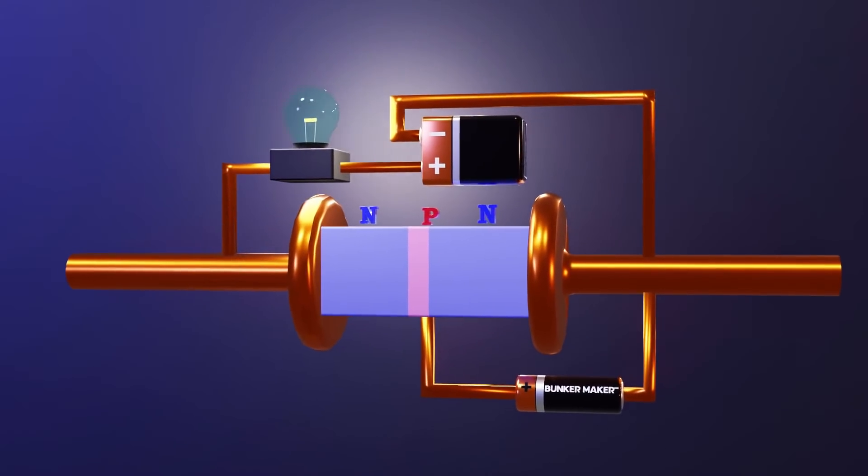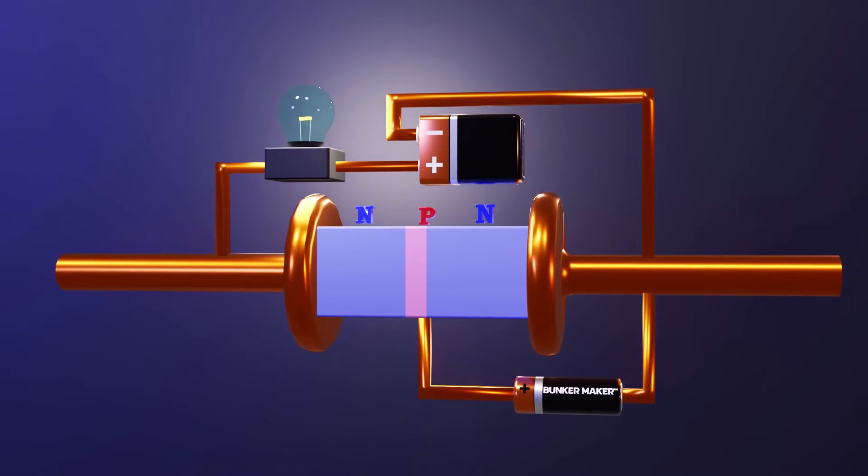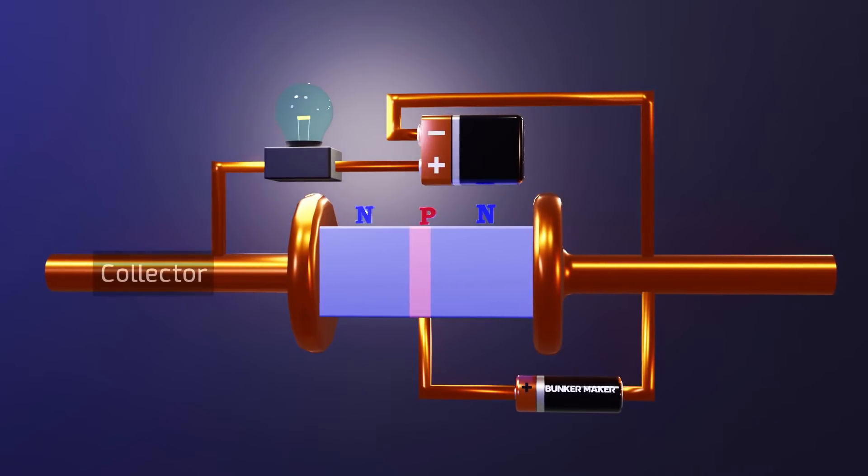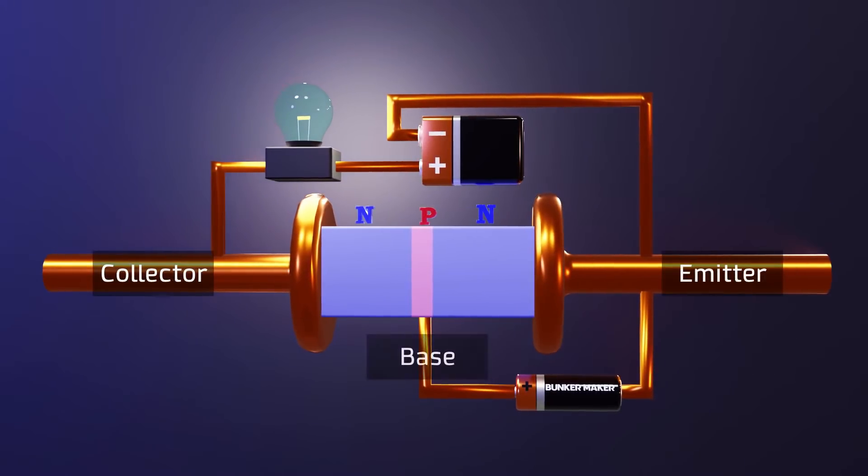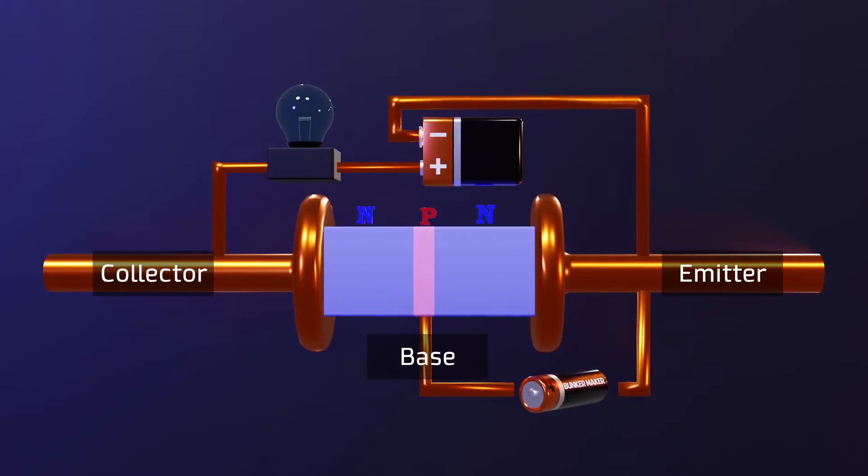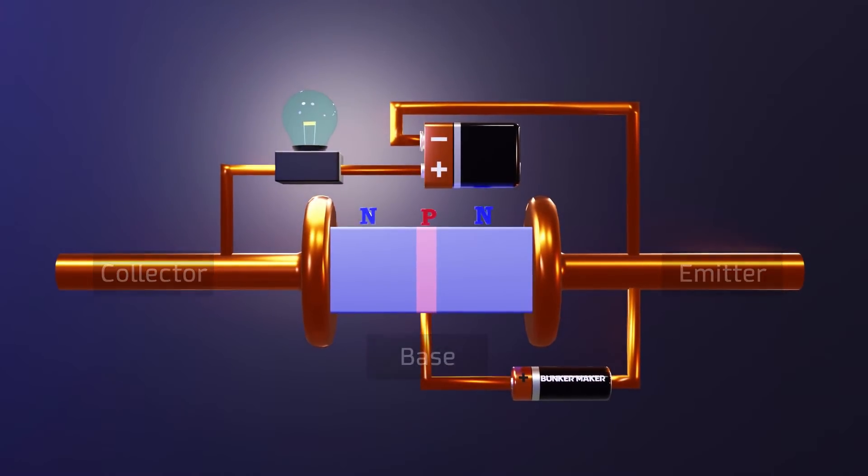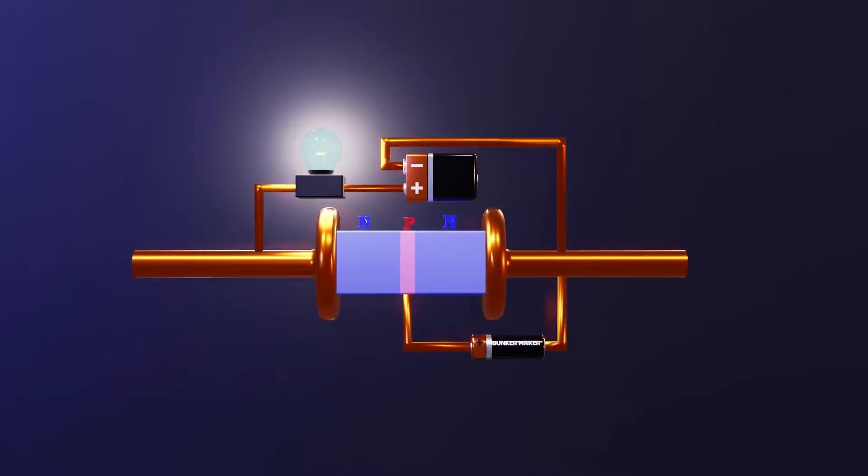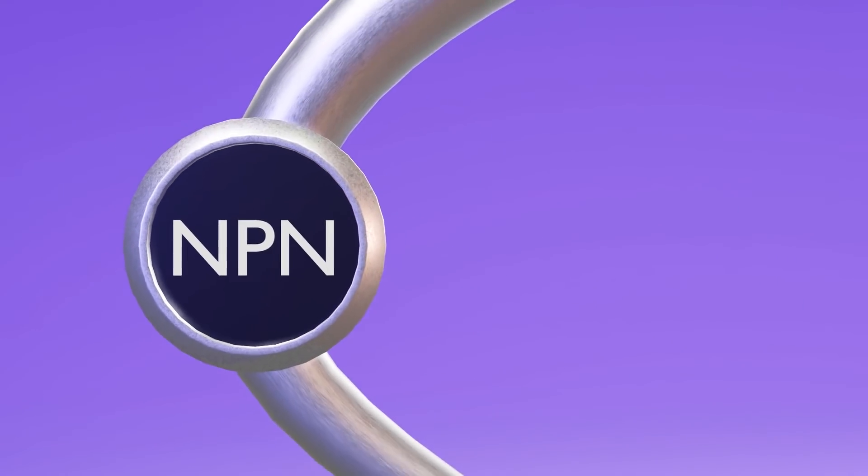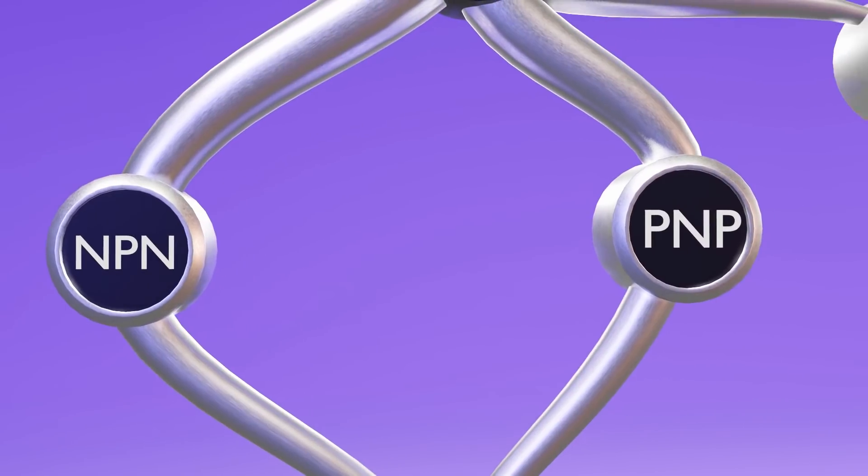Returning to our NPN bipolar junction transistor, this will form two merged P-N junctions with a total of three terminals or electrodes: the collector, the emitter and the base. The grace of this mix of components is that by varying the current that passes between the emitter and the base, we can control whether or not the current passes between the collector and the emitter, being able to act as a switch or signal amplifier.